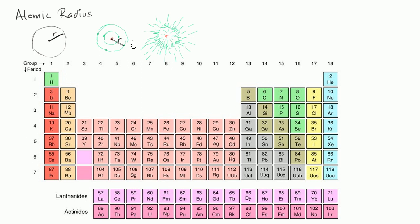At a given moment the outermost electron might be here, so you'd call that the radius. But in the next moment there's some probability it ends up somewhere else, and then the radius could be there. Electrons in these orbitals — these diffuse probability distributions — don't have a hard edge. So how can you say what the size of an atom actually is?